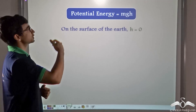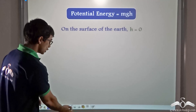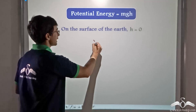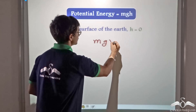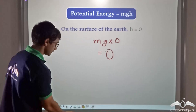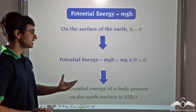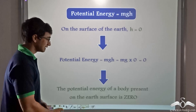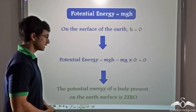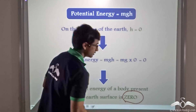Potential energy is mgh, and on the surface of the earth h is equal to zero, so m × g × 0 gives zero. Thus on the surface of the earth the potential energy is zero. The earth's surface represents a reference surface where the potential energy of any body is zero.